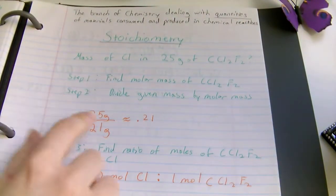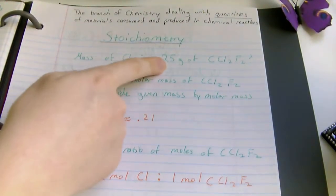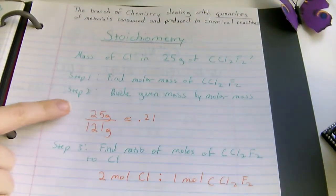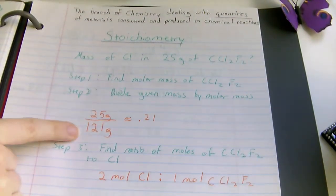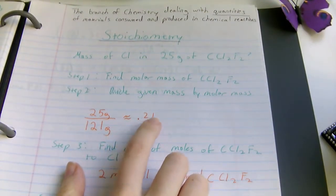Step two, divide the given mass by the molar mass. They gave us 25 grams of the whole compound. So part divided by the whole will give us the moles, an approximation, 0.21 moles.